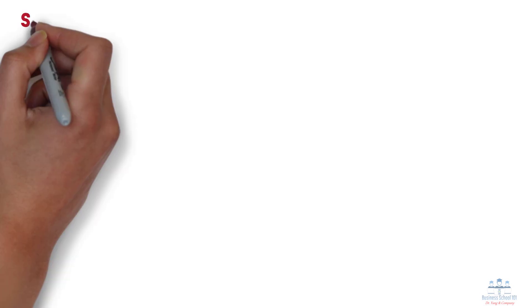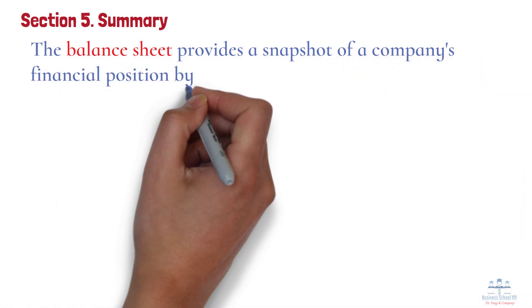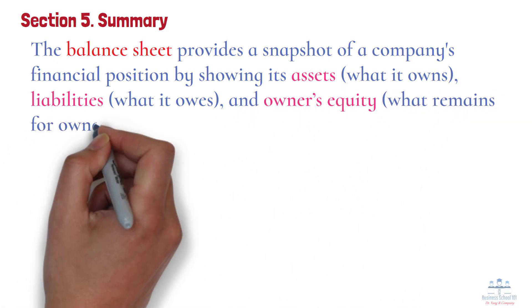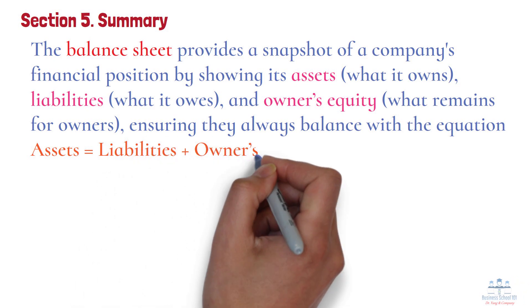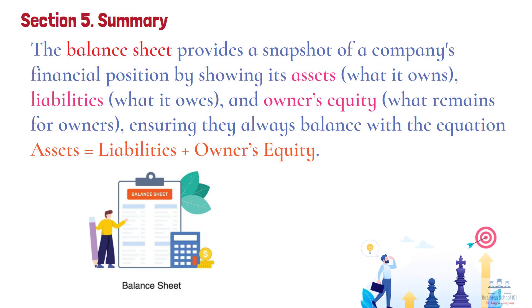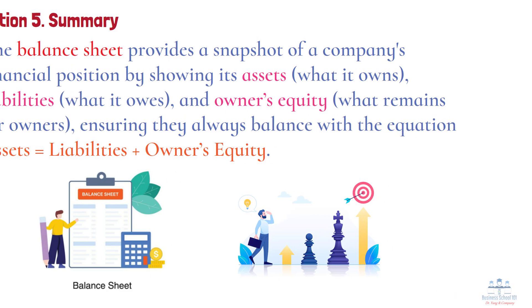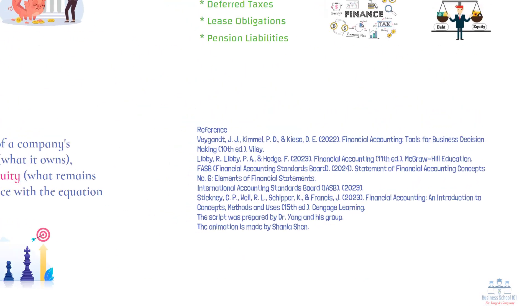Section 5: Summary. The balance sheet provides a snapshot of a company's financial position by showing its assets (what it owns), liabilities (what it owes), and owner's equity (what remains for owners), ensuring they always balance with the equation: assets equals liabilities plus owner's equity. Understanding the balance sheet is essential for making informed financial and business decisions. If you find this video helpful, don't forget to like, subscribe, and leave your comments below. Thanks for watching and I'll see you next time.